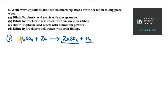Now we need to write the balanced equation. If you notice, all things are balanced. Zinc is 1 on both sides. Hydrogen is 2 on each side. Sulfur is 1 on the left-hand side and 1 on the right-hand side. Oxygen is 4 on the left-hand side and 4 on the right-hand side. So the first part is done.